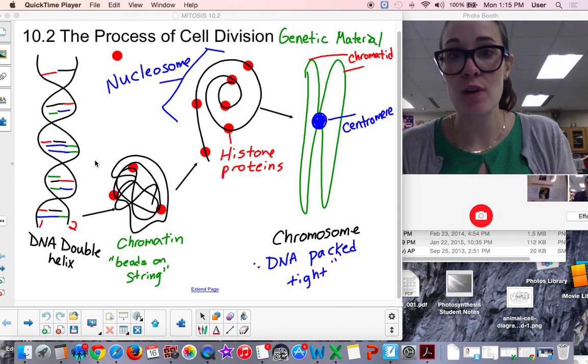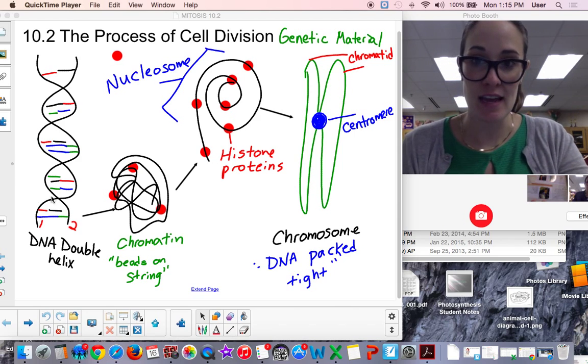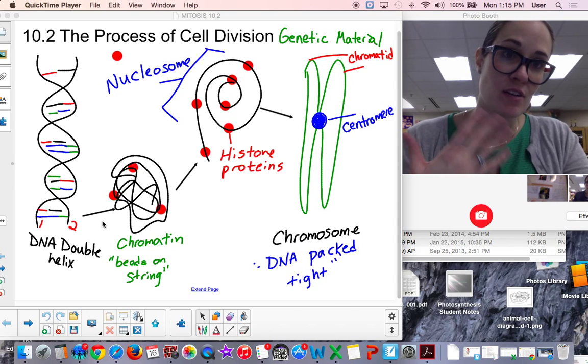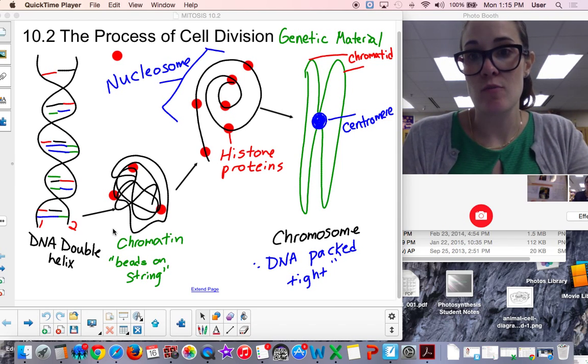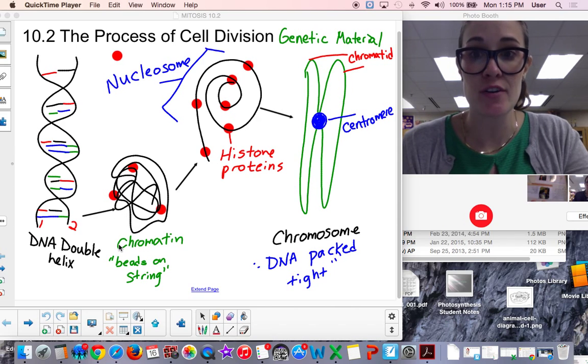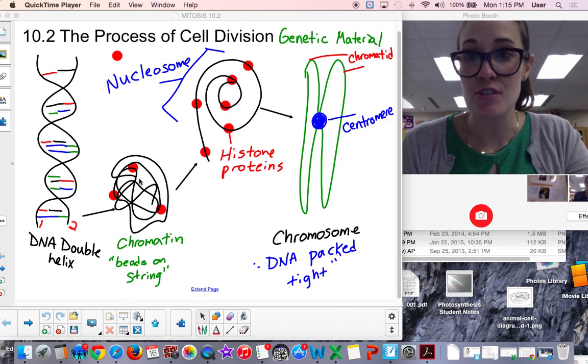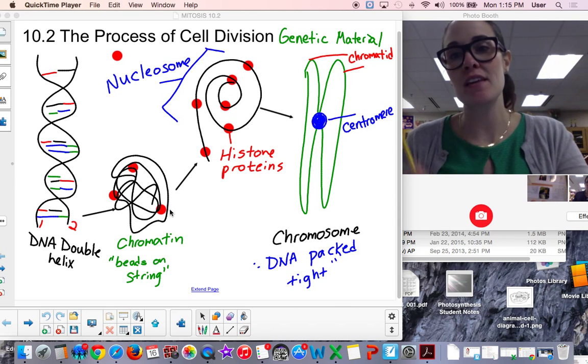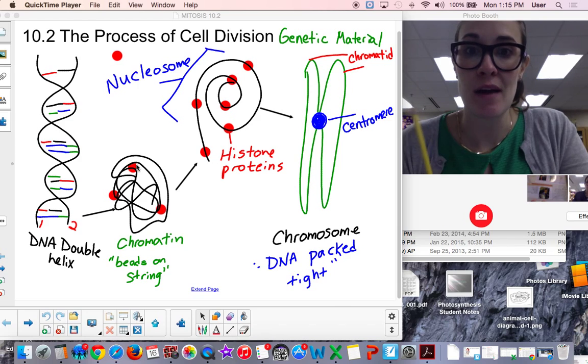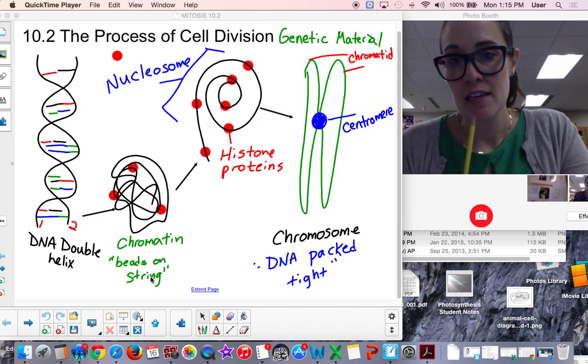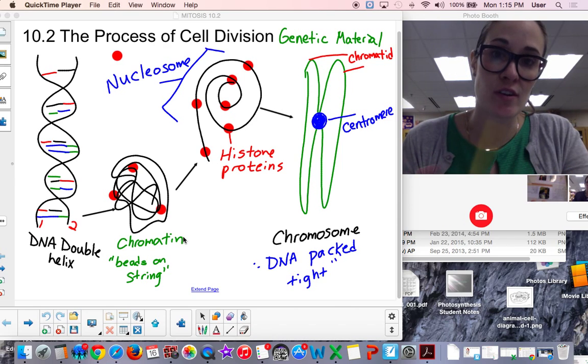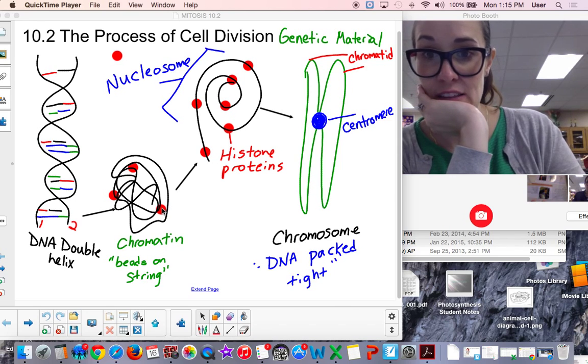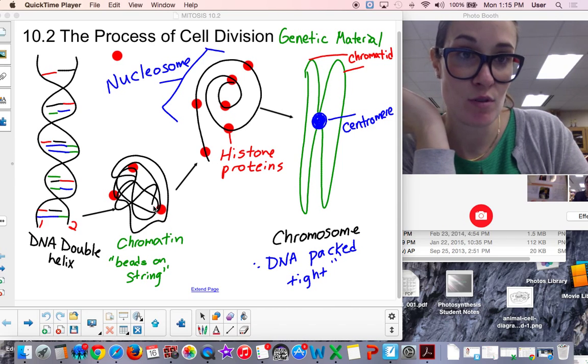If we were to take that double helix and wind it up further, draw an arrow here, and essentially it's getting wound up together more. It would create this form of the genetic material called chromatin. And all you need to do is just draw like a string, draw a line that looks like a string, and put these round, what are called actually histone proteins, on the string.